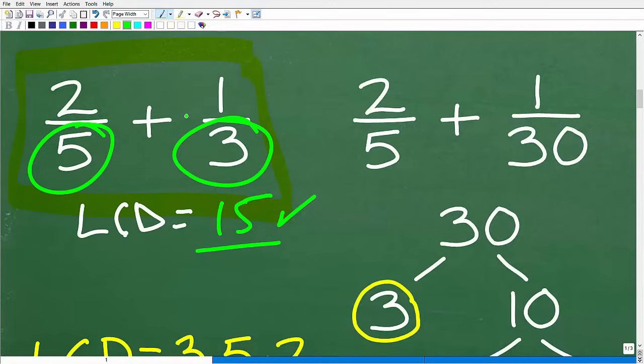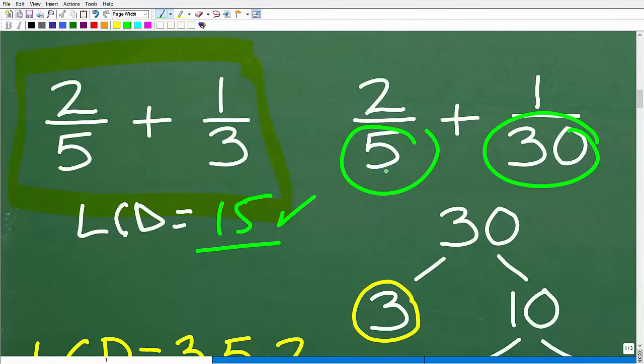Well, a lot of people don't really know how they found the LCD. They just know they have the LCD. And that's often the case because these numbers here are very easy, very simple. Let's take a look at this example: 2 fifths plus 1 over 30. Okay, what is the LCD here? Well, the LCD is 30, okay? So we have 5 here and we have 30 here. So if you wanted to add these fractions, we'd have to make each denominator into 30.